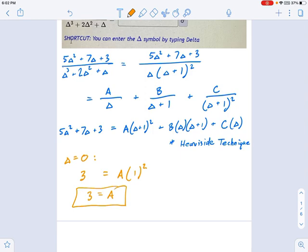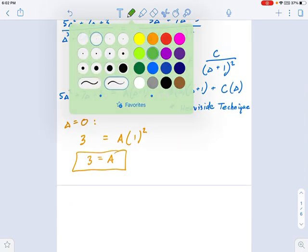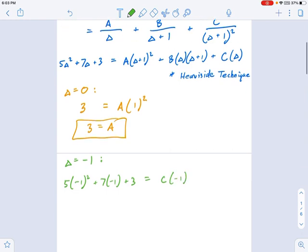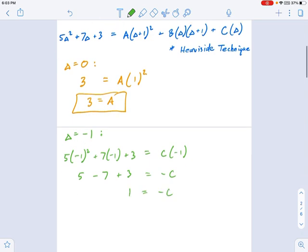That was cool, nice and quick. We're going to choose another value of delta, which is delta equals negative one. I think negative one's going to do some things for us. That's going to make these guys cancel out right there. When you choose delta equals negative one, we get five times negative one squared plus seven times negative one. I'm just working on the left side of the equation right now. On the right side, the A's cancel out, the B's cancel out, you just get C times negative one. Let's work that down a bit. This becomes five minus seven plus three equals negative C. Five minus seven is negative one, so we get C equals negative one.